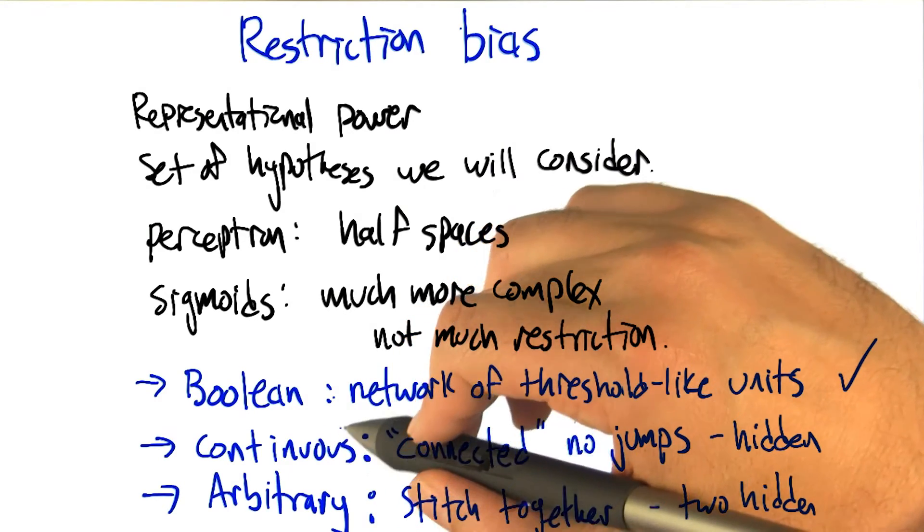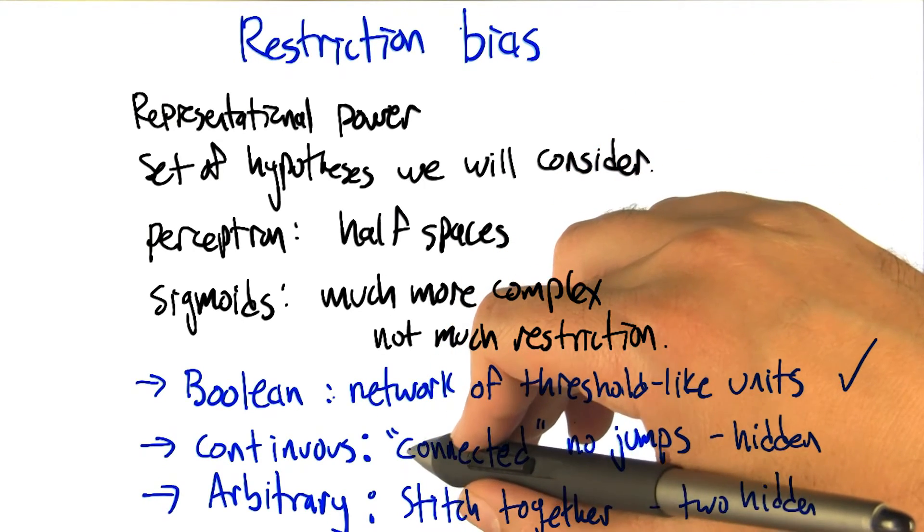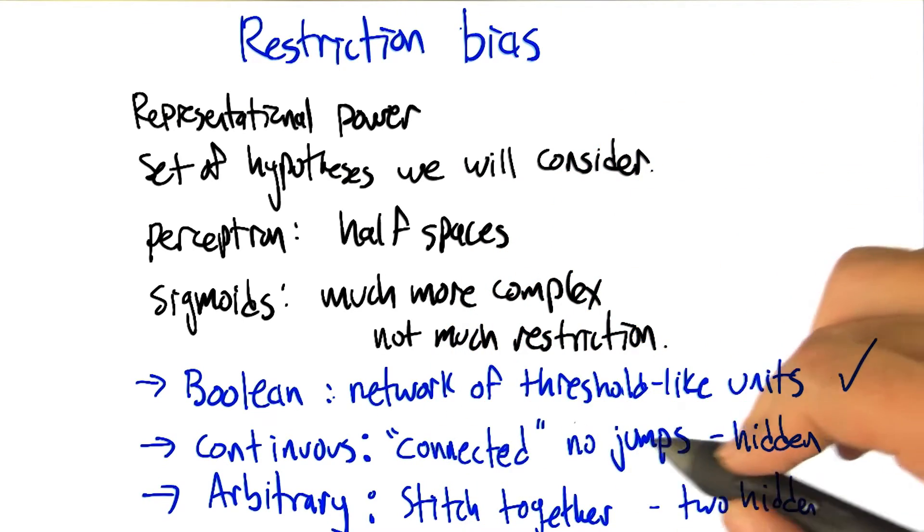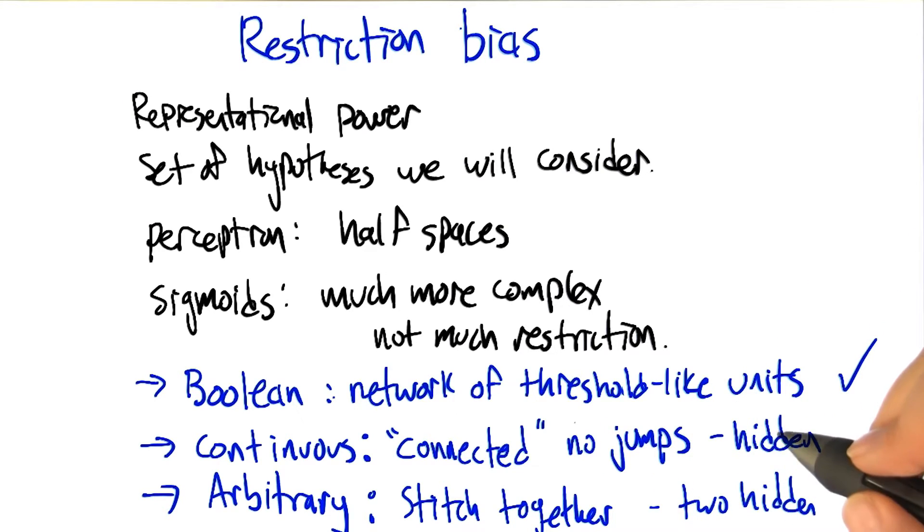All right, now if we've got a continuous function that we're trying to model with a neural network, as long as it's connected, it has no discontinuous jumps in any place in the space, we can do this with just a single hidden layer. As long as we have enough hidden units. As long as there's enough units in that layer. And essentially one way to think about that is, if we have enough hidden units, each hidden unit can worry about one little patch of the function that it needs to model.